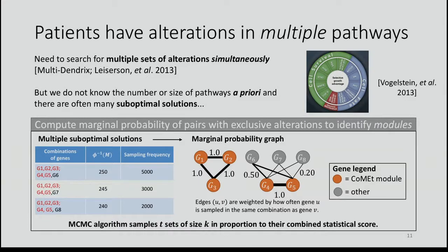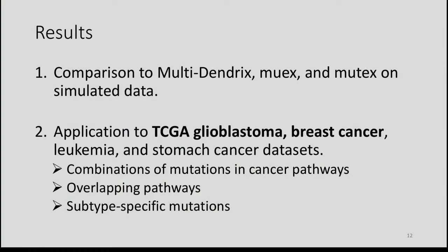We compared COMET to Multi-Dendrix, Mutex, and MuX on simulated data and show it outperforms these methods — details are in the paper. We also applied COMET to TCGA glioblastoma, breast cancer, leukemia, and stomach cancer datasets. I want to focus on the glioblastoma and breast cancer results.